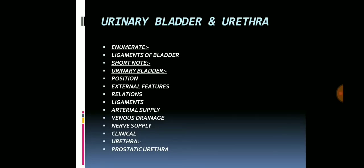In case the question comes on the urinary bladder, you have to write about the position, external features, relations — which is very important and can be asked as a separate question — ligaments, which can also be asked separately, arterial supply, venous drainage, nerve supply, and clinical aspects. In case of the urethra, the question generally comes on the prostatic urethra.